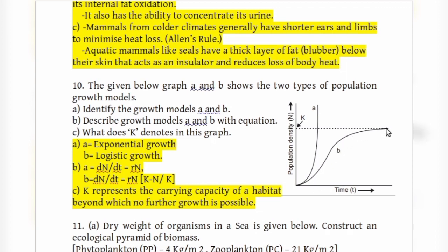For exponential growth (A), the equation is dN/dt = rN. For logistic growth (B), the equation is dN/dt = rN × (K−N)/K, where K is the carrying capacity. K represents the carrying capacity of a habitat beyond which no further growth is possible.